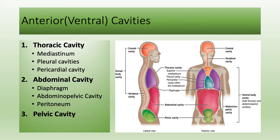Below the thorax, the abdominal cavity lies. Between the thoracic and abdominal cavity there is a dome-shaped muscle called the diaphragm. The major organs in the abdominal cavity are the liver, gallbladder, pancreas, stomach, small and large intestines, spleen, kidneys, and adrenal glands.